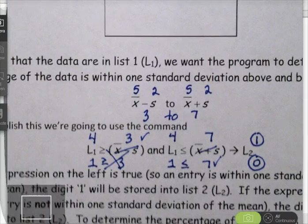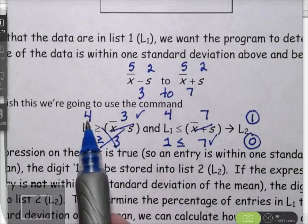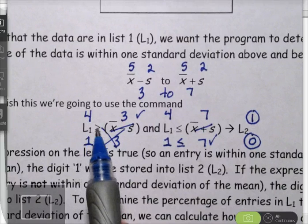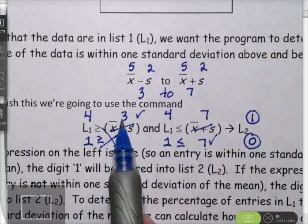So what your calculator program is going to do, it's going to take each value from list 1. So let's say there's a 4 in list 1. And it's going to see if that 4 is greater than or equal to this lower boundary, the mean minus the standard deviation, or 3, which it is.